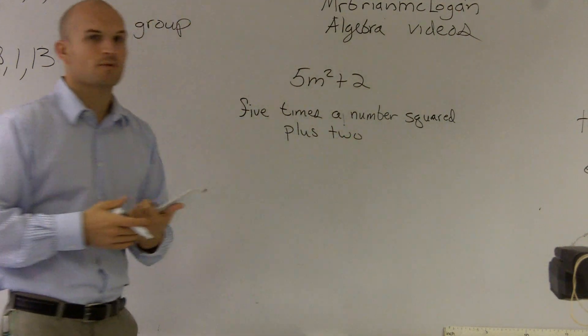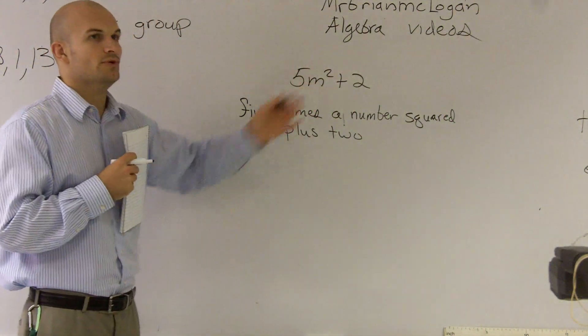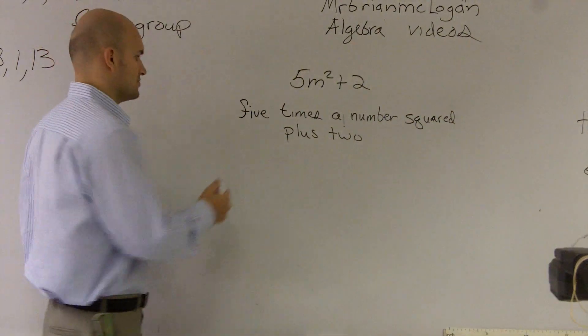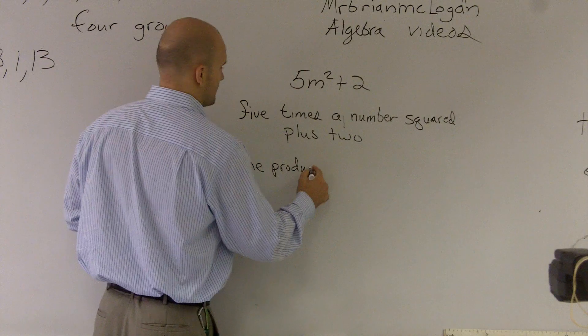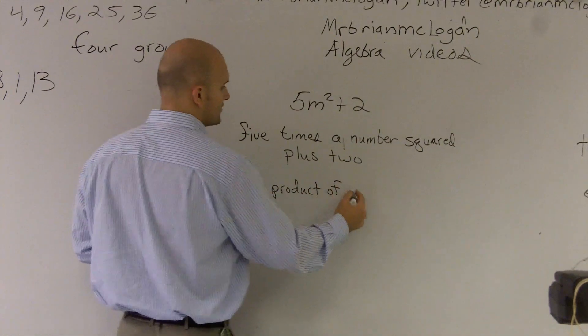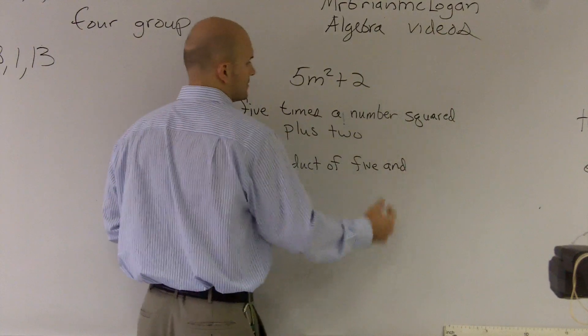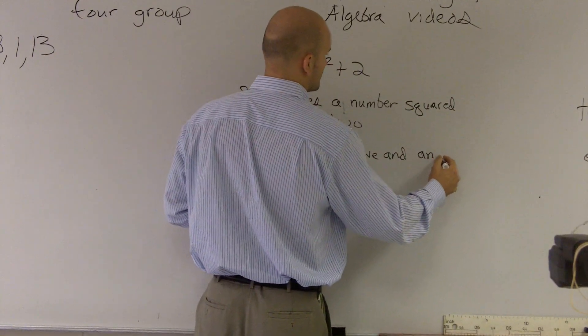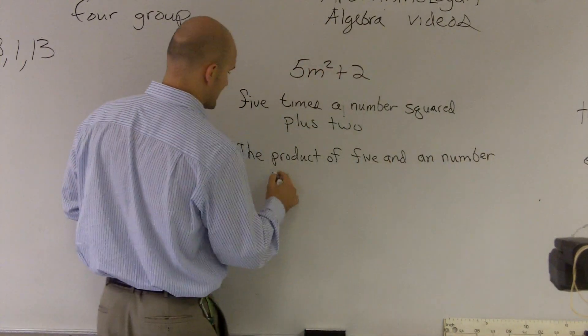Now let's write it in a different way because there are different ways to write this. Your answers are not always going to be the same. We could also call this the product. So we could say the product of 5 and a number raised to the second power.